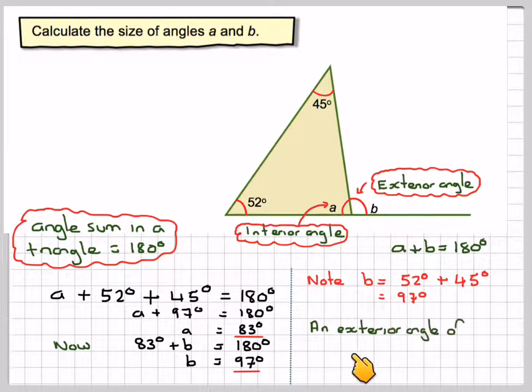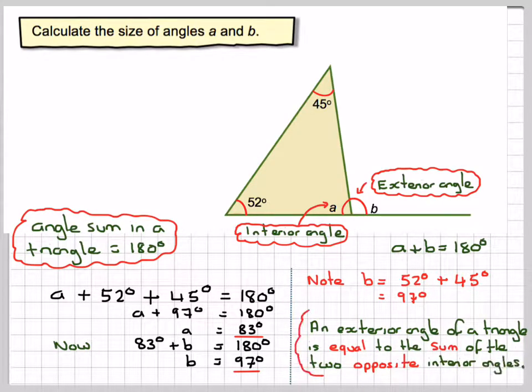So, an exterior angle of a triangle is equal to the sum, i.e. adding together, of the two opposite interior angles. What I'm saying is this angle here, B, exterior angle, is going to be equal to 52 plus 45.